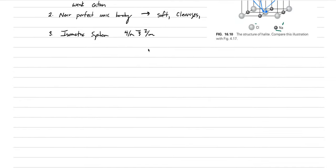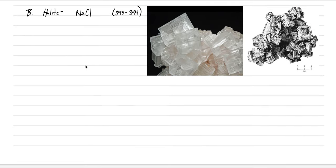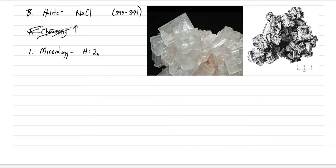Now moving to the systematic mineralogy: of the minerals we're going to talk about today, halite is the most important. The chemical formula is NaCl; in the textbook it's pages 393 to 394. The mineralogy of halite: hardness is 2.5, specific gravity is very light at 2.16 — that's going to have major geologic significance later.